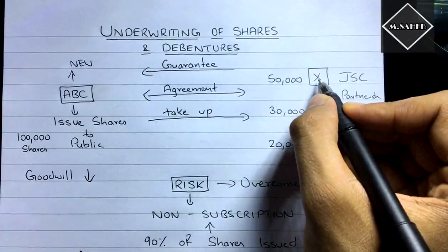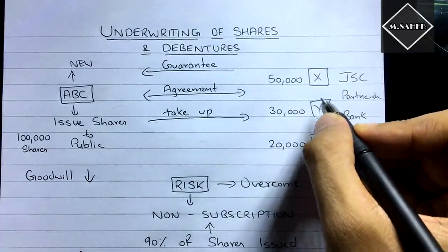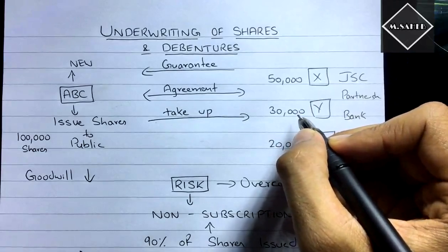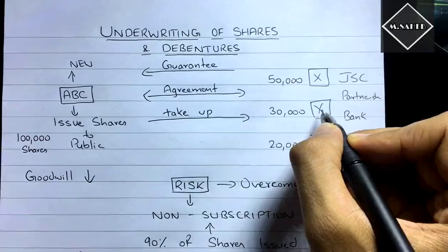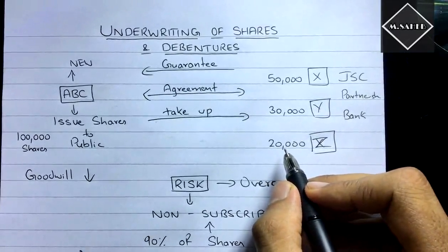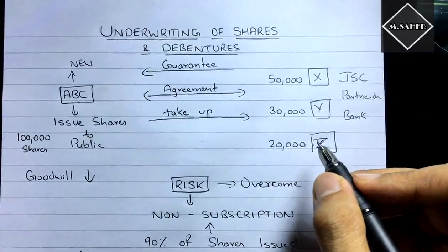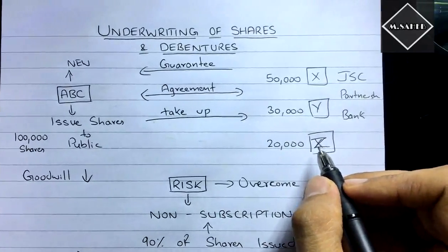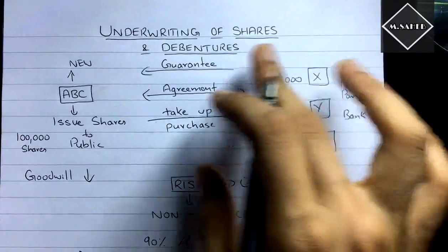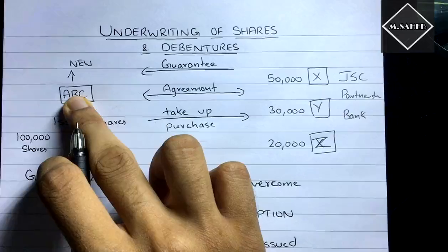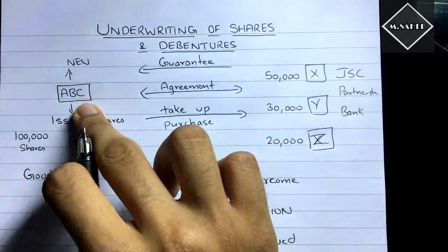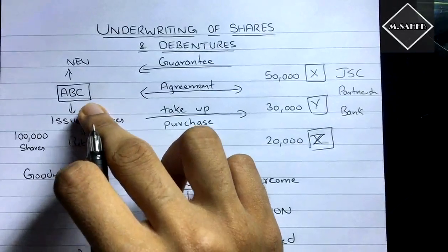Similarly, Y says he'll try to get the public to subscribe to 30,000 shares, and if only 29,000 are subscribed, he'll take up the remaining 1,000. Z also says if only 19,500 are subscribed, he'll take up the remaining 500. So X, Y, and Z are giving a guarantee — an assurance — of public subscription to ABC company.